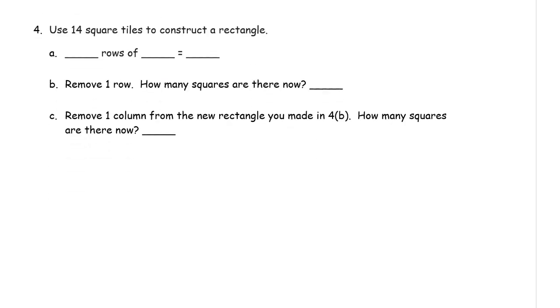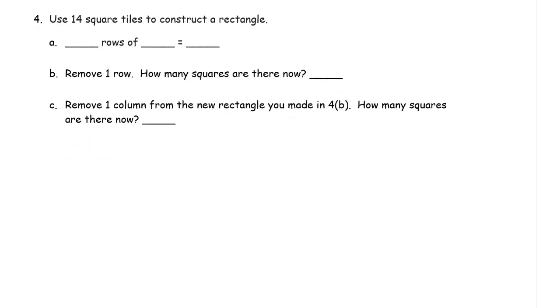Now you use 14 squares to construct a rectangle. So, there's a lot of different, let's see, 14, you can have 2 rows of 7. There's a lot of different ways to do it. I can think of 4. Maybe you can find all 4 of them. But here's 1 of them. There's a lot of different ways to do it. You can find a way that's different than mine. But I'm just thinking of 2 rows of 7.